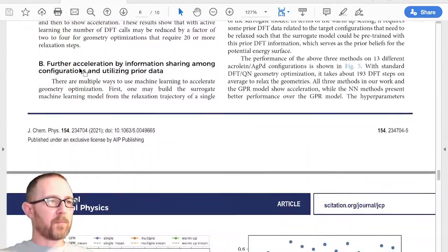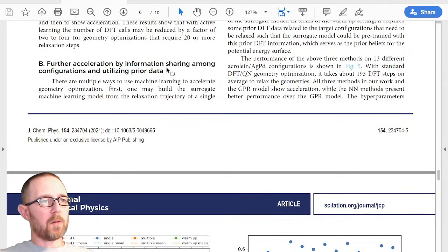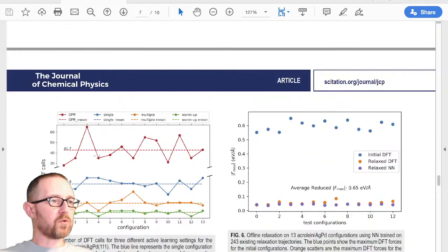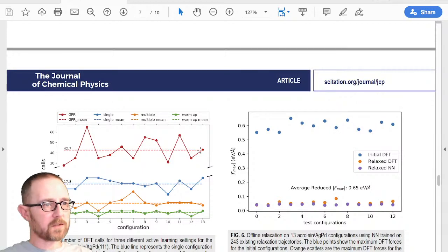All right, let's look at what happens when we can share information among the configurations, either by doing them in parallel or by utilizing prior data. So this figure shows for 13 different configurations of acrolein on a silver palladium alloy. What happens without any of this, it takes about 193 steps for the geometry optimization to happen. If we use a Gaussian process regressor, we get a reduction to about 43 steps across all of the configurations.